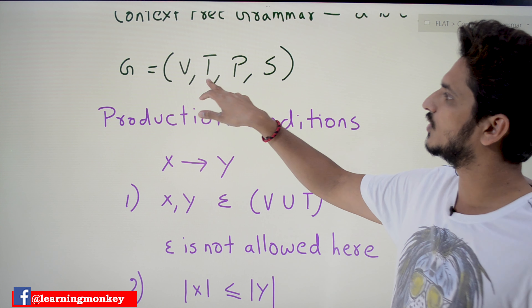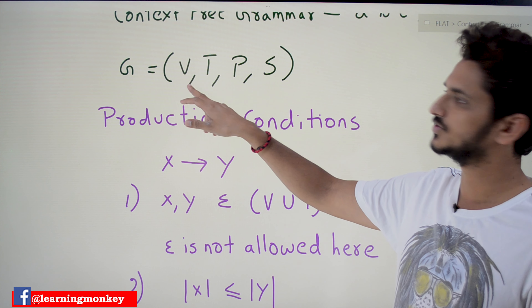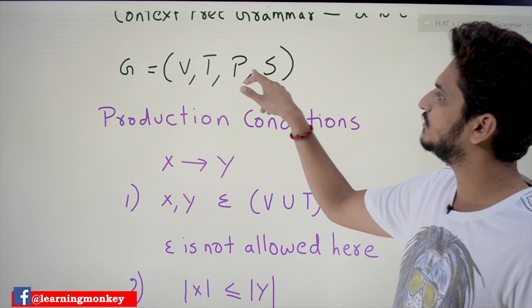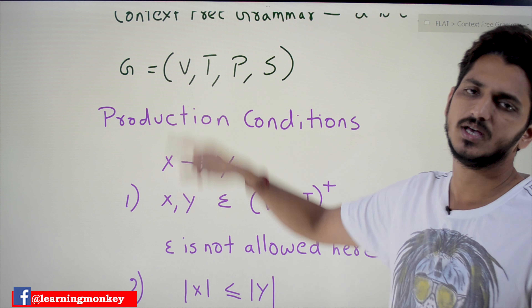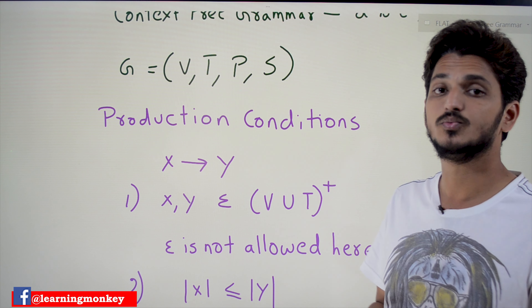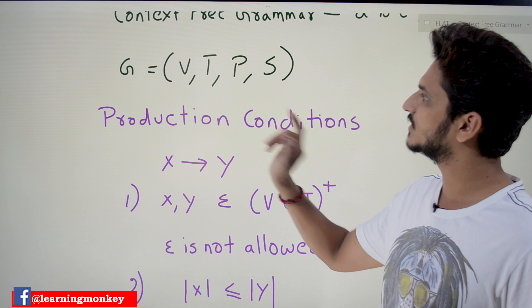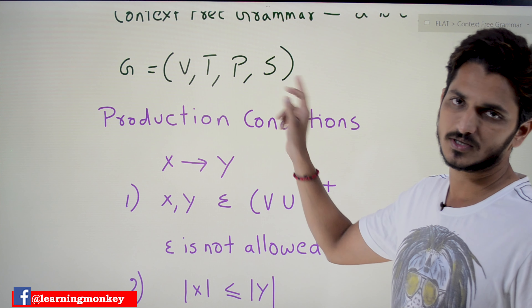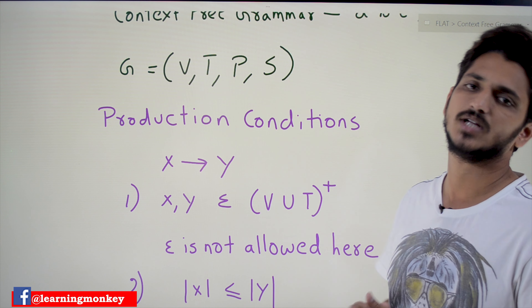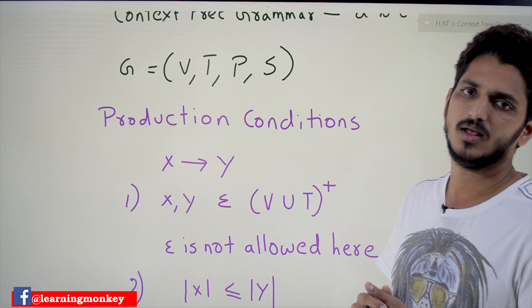A grammar G is equal to (V, T, P, S), where V means variables — we call them non-terminals. T means terminals. P means productions. S means start symbol.